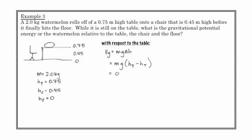So here, with respect to the table, the watermelon has no potential energy. Because if we're measuring with respect to the table, and it's sitting on the table, then it basically has no gravitational potential energy at all. Because it's not changing its height. When it moves from the table to the table, it's not changing its height at all.